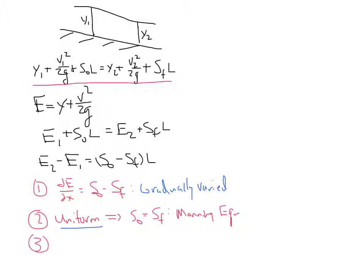The third possibility is to say that for short distances, short L, E1 is approximately equal to E2, since when L is small, S0 minus SF is small. But in this case, we're not constraining ourselves to uniform flow. This would be the case of rapidly varying flow.